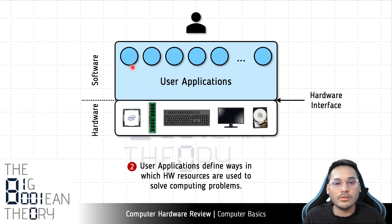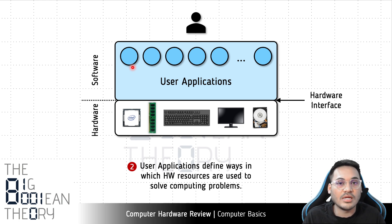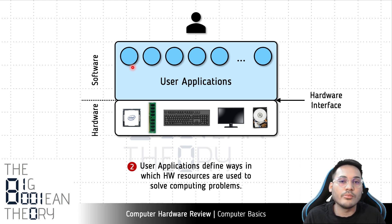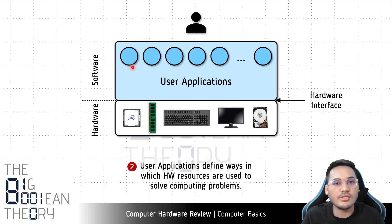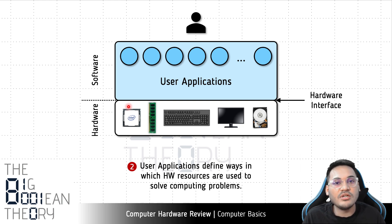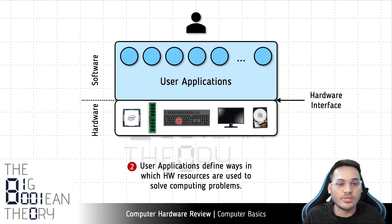Each user application is meant to solve some computing problem, and that problem varies from one application to another. For example, the web browser solves the problem of communication over the network — sending requests and displaying results to the user. A movie player solves the problem of playing a video file with audio. Although different user applications solve different computing problems, the common thing among all of them is that they use the same computer hardware — CPU, memory, and I/O devices — in different ways.